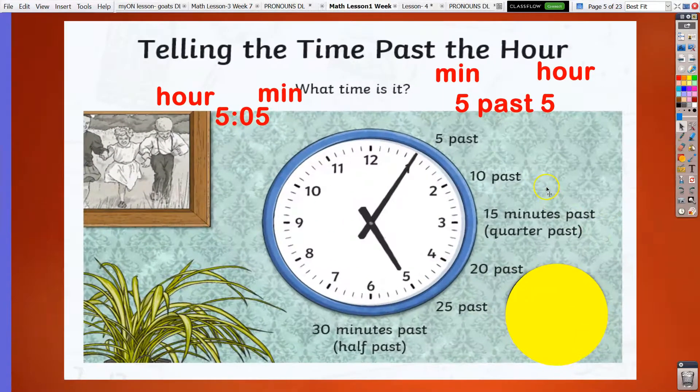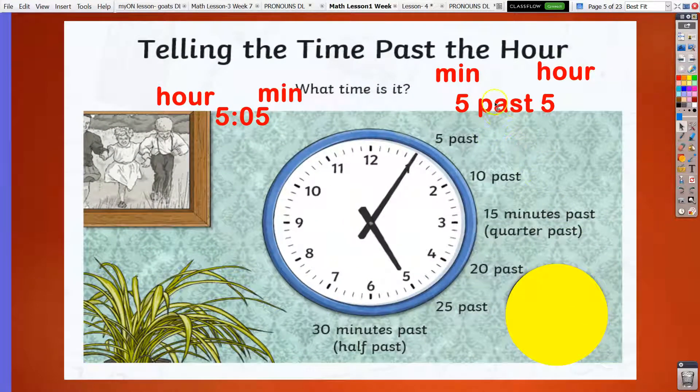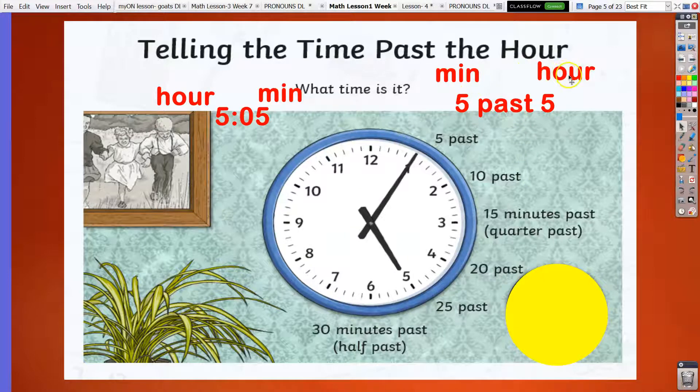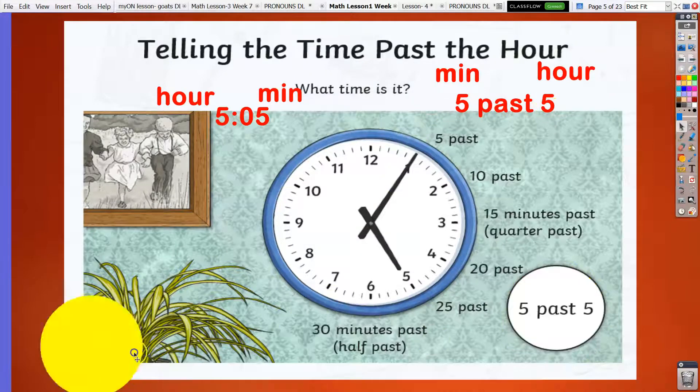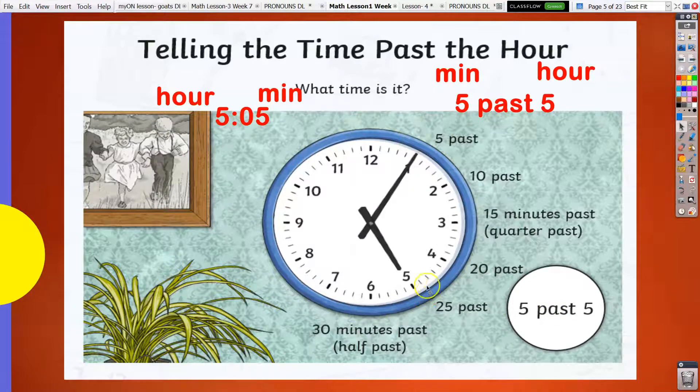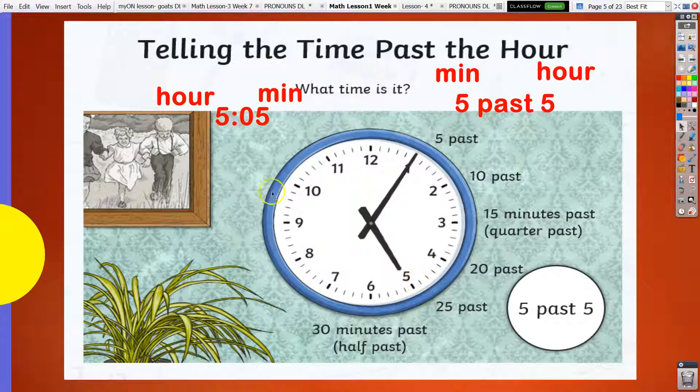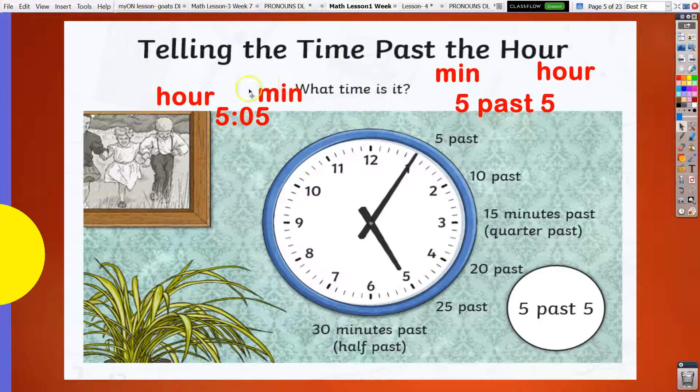Telling the time in words should follow the same pattern. For instance, we have here minutes and hour. So when you tell the time in words, you have to say first the minute that have passed and the hour. So for this time, we have 5 past 5. So it's 5 minutes past 5 o'clock. Or in digital, we say it 5:05. We say hour first before the minute.